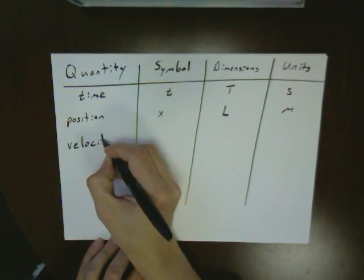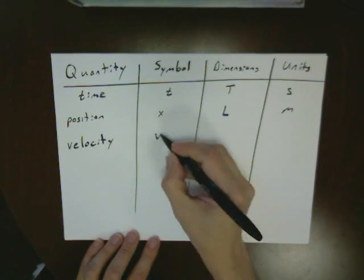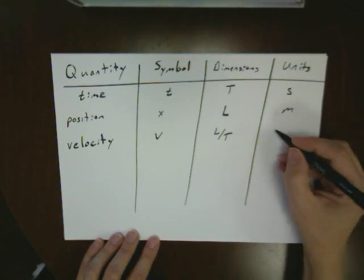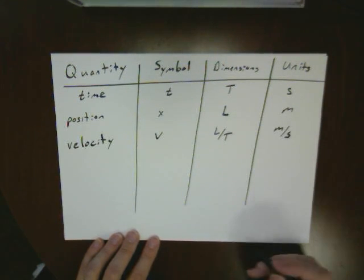We then added to our list velocity, general symbol of V. That always had a length per time, and that was a unit of meter per second.